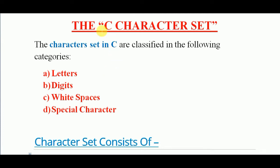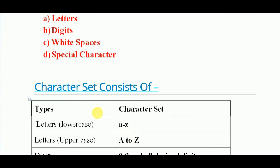Now let us look at the classifications of the C character set. The characters in C are classified into the following categories: firstly they are classified as letters, then digits, next white spaces, then special characters. Now let us have a look at what types of letters, digits, white space, and special characters are used in C programming language.